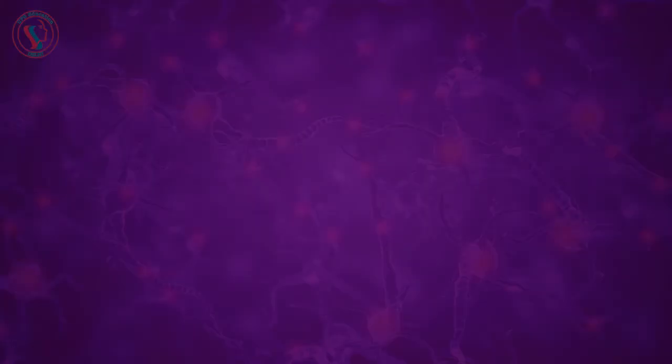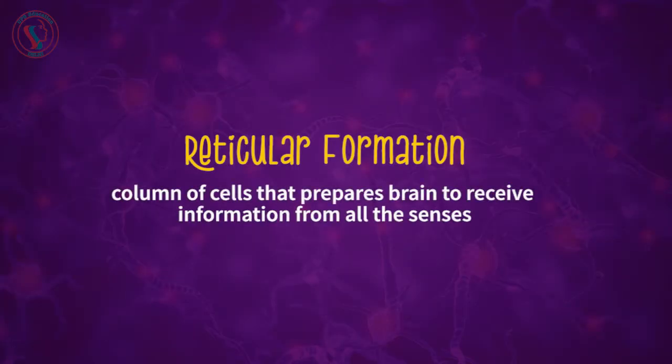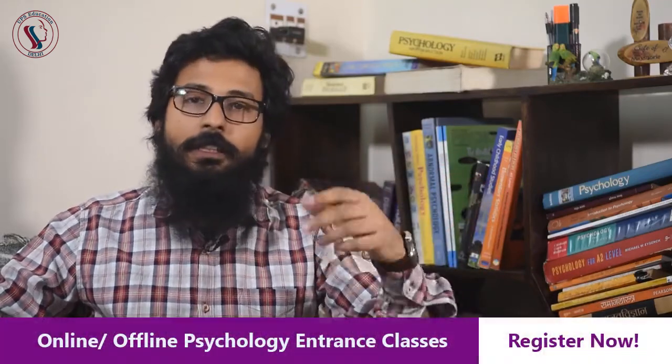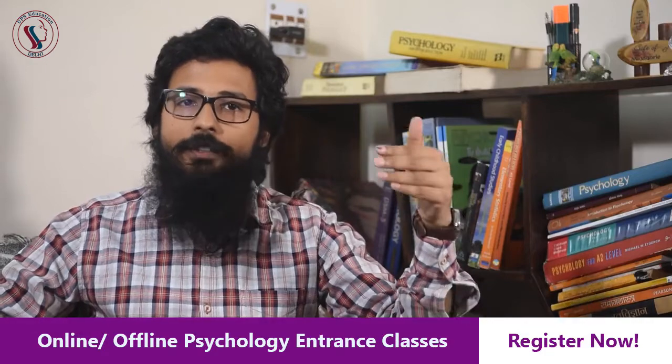Another important part of the brain is the reticular formation. The reticular formation is a column of cells that prepares the brain to receive information from all five senses. It is important for keeping our forebrain alert and producing a state of wakefulness. If the reticular formation is stimulated during sleep, the individual will wake up. If it is seriously injured in an animal or human, that individual will be in permanent unconsciousness — or we can say, in a coma.